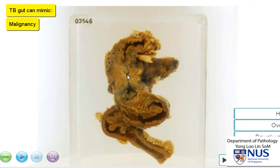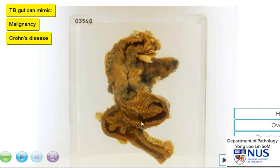The other important differential diagnosis is inflammatory bowel disease, in particular Crohn's disease, because Crohn's disease can also give rise to distortion of the bowel and ulceration, although the ulcers are usually deeper. It also involves a similar location in the ileocecal region, and it can also give rise to deep ulcers, fissures, and fistulation.